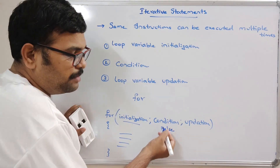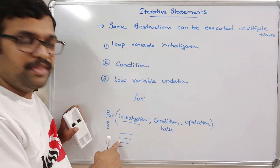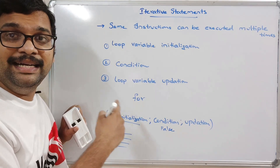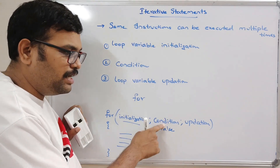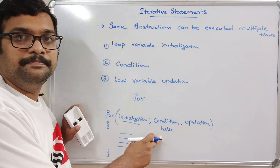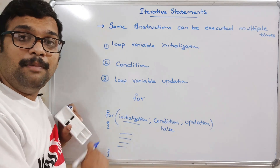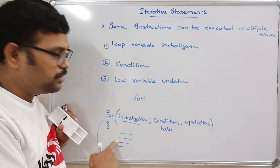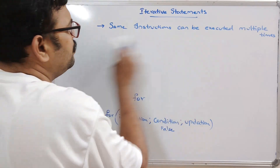This continues until the condition becomes false. After some finite number of iterations, the condition becomes false. If the condition is always true, it goes into an infinite loop and never stops executing. So we have to write the condition carefully so that after some iterations it becomes false, and the control will automatically come out from the loop.